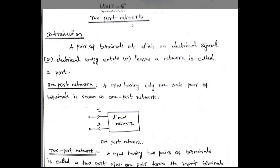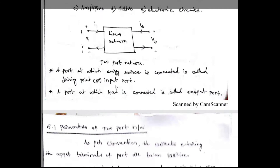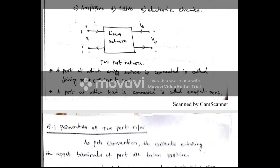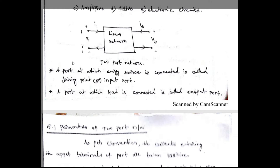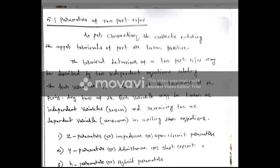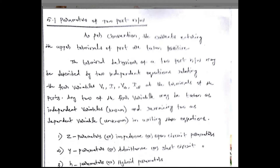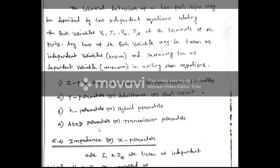In this unit we analyze the two-port network. The input port (1-1 dash) is where the energy source is applied, and we take output from the output port. To analyze the two-port network, we use different parameter methods: Z parameter, Y parameter, H parameter, and ABCD parameters.